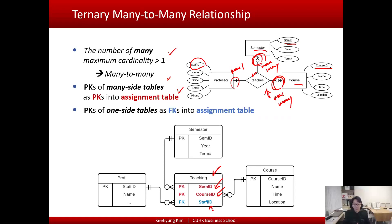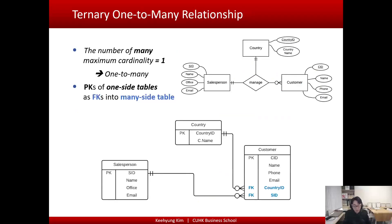Just to remind you, I also put the rule for other types of relationships. For example, when you have a totally one-to-many relationship, it means there is only one maximum-many cardinality in the relationship — only this one has a maximum-many cardinality.